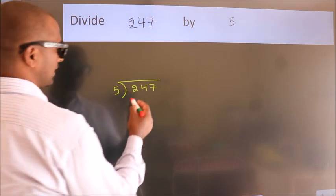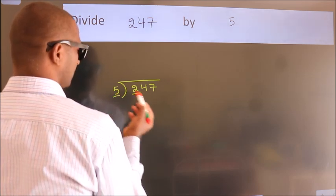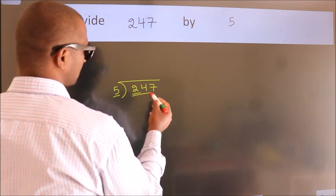Next. Here we have 2. Here 5. 2 is smaller than 5. So we should take 2 numbers. 24.